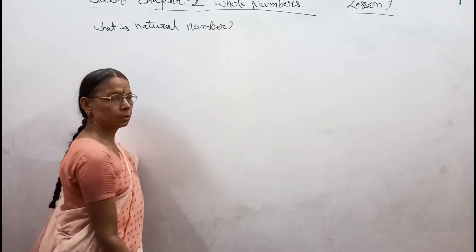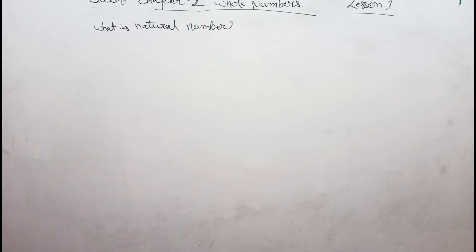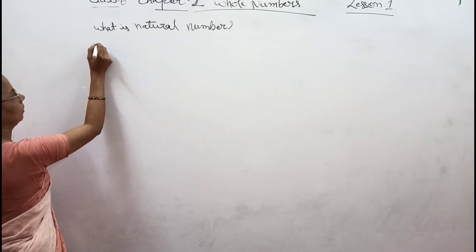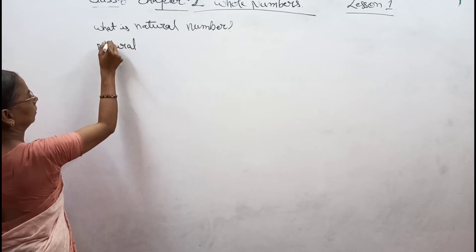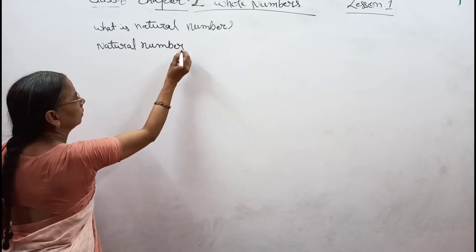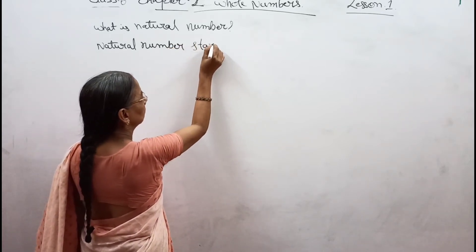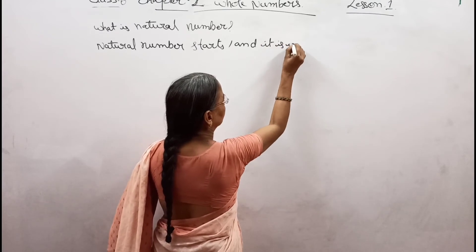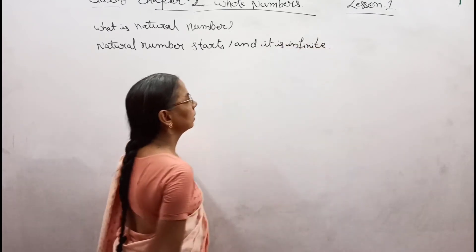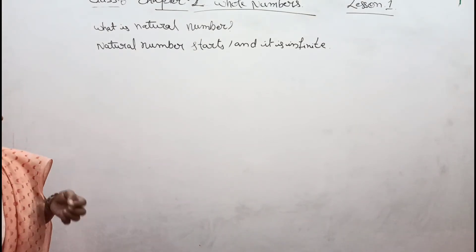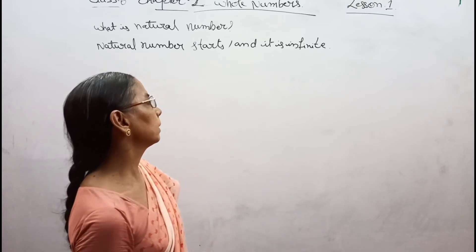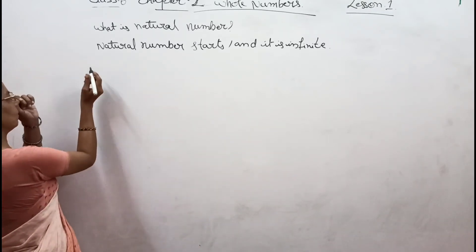Natural number is a number which we learned in the last classes, which starts from 1. Natural number starts from 1 and it is infinite, because it will not end — the numbers will not end any way. So whatever numbers we use in day-to-day activities are called natural numbers.